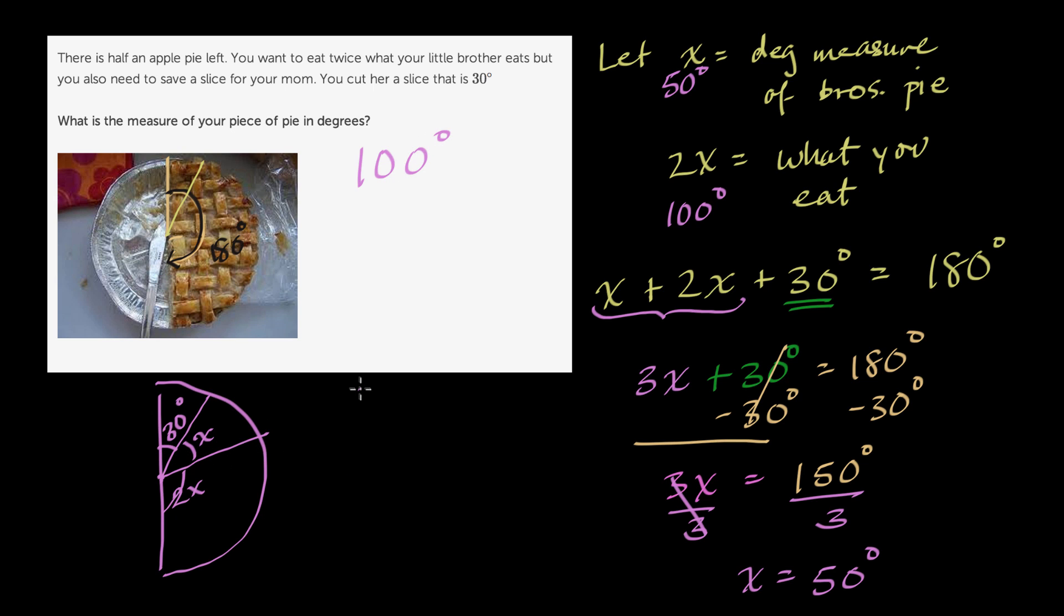So if we draw our pie again, if we draw our half pie, you have 30 degrees for your mom. You have 50 degrees for your brother. And then you have twice that for yourself, 100 degrees.